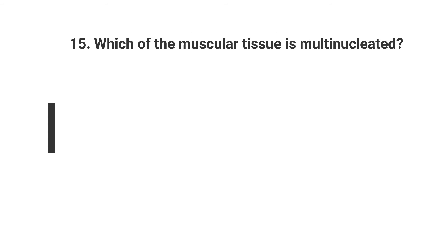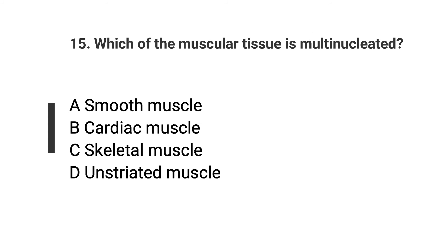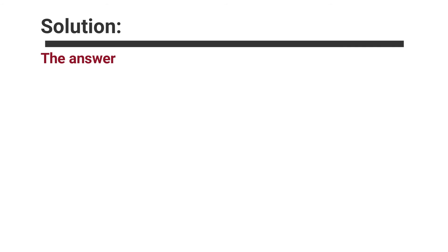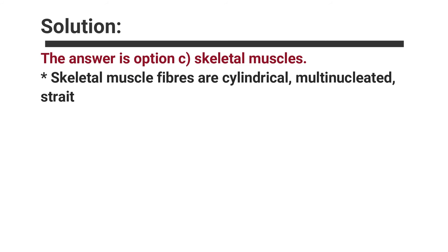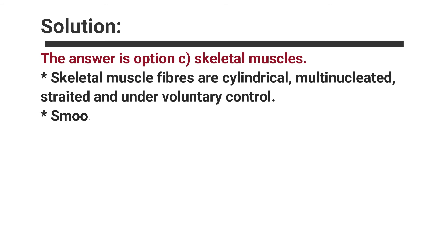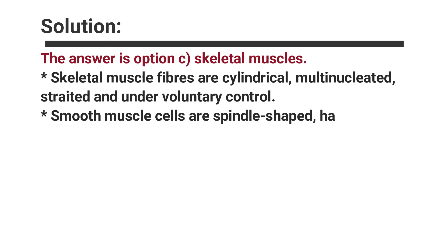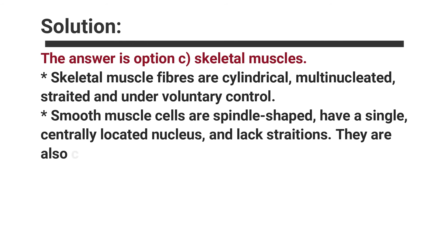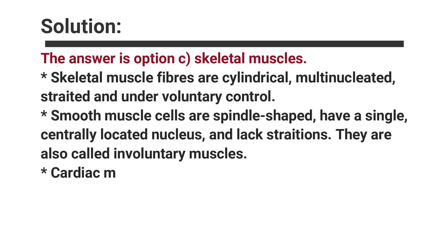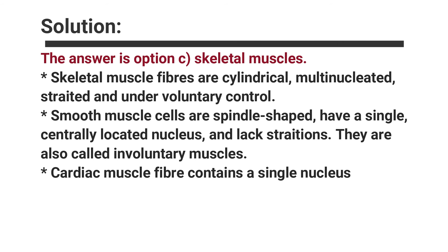Question number fifteen: Which of the following muscular tissues is multinucleated? Options are A. Smooth muscle, B. Cardiac muscle, C. Skeletal muscle, D. Unstriated muscle. The answer is option C, Skeletal muscle. Skeletal muscle fibers are cylindrical, multinucleated, striated, and under voluntary control. Smooth muscle cells are spindle-shaped, have a single centrally located nucleus, and lack striations — they are also called involuntary muscles.